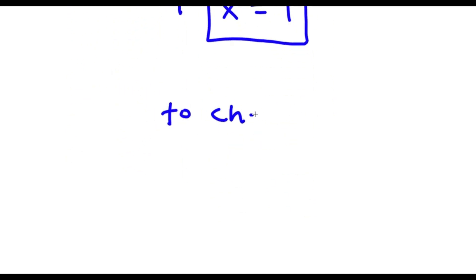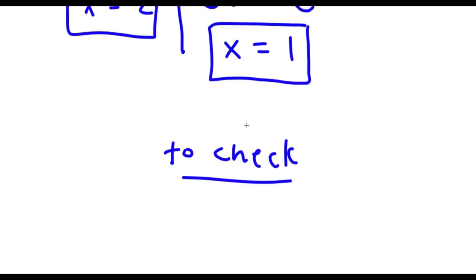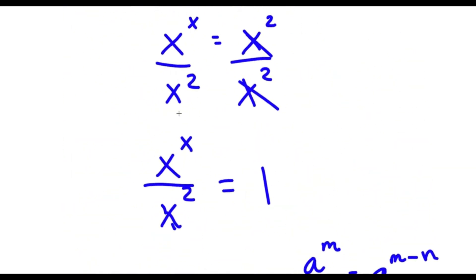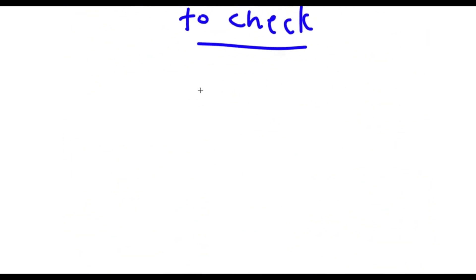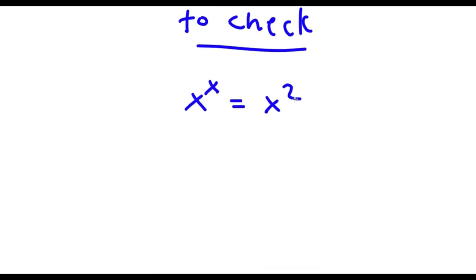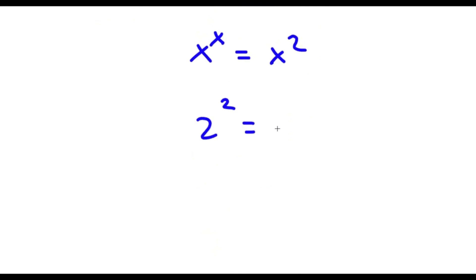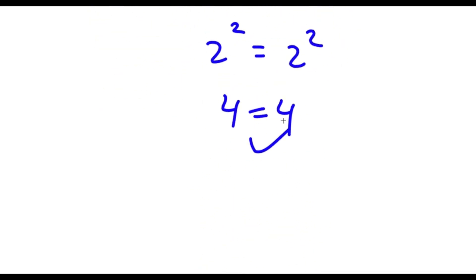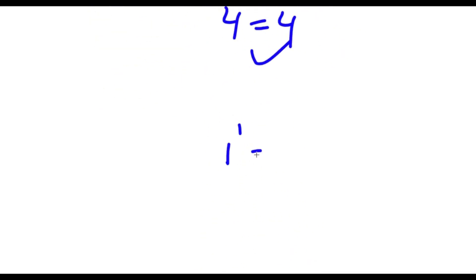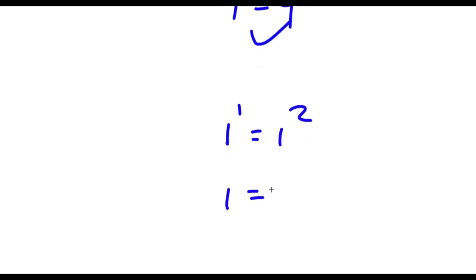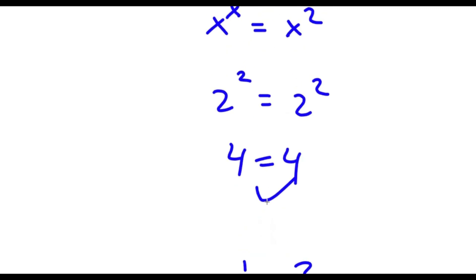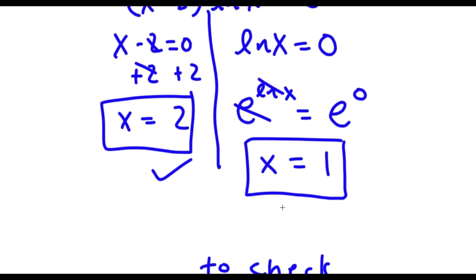To check, my equation is x^x equals x^2. For x equals 2: 2^2 equals 2^2, which is 4 equals 4 — correct. For x equals 1: 1^1 equals 1^2, which is 1 equals 1 — also correct. So both solutions are verified.